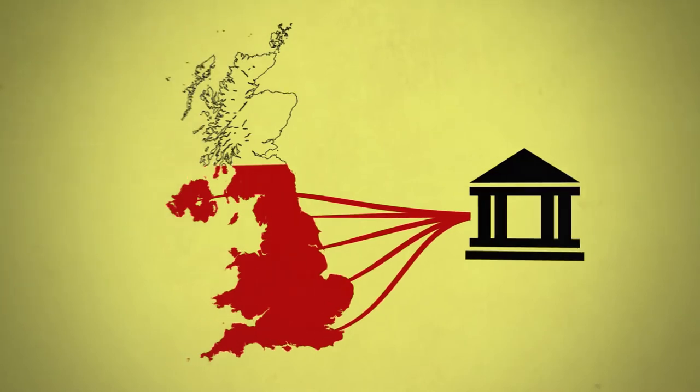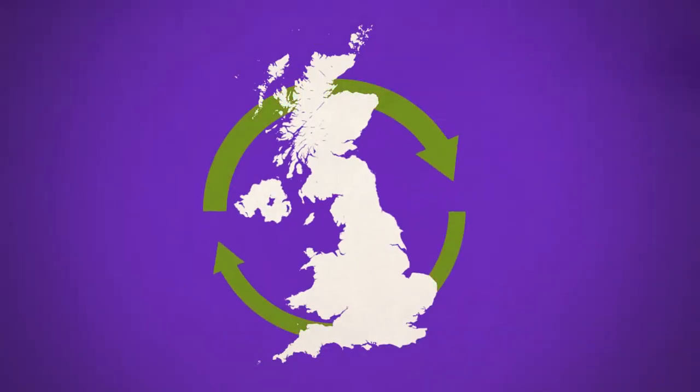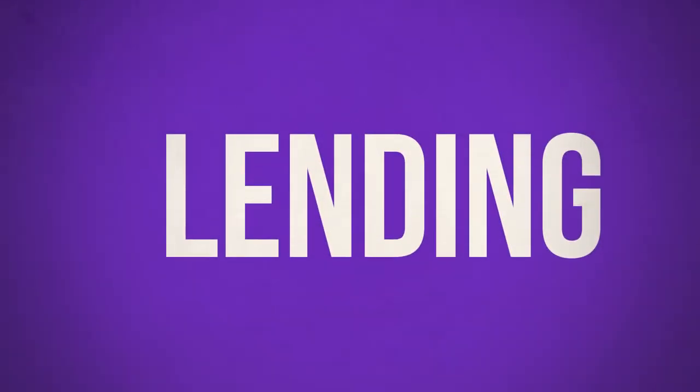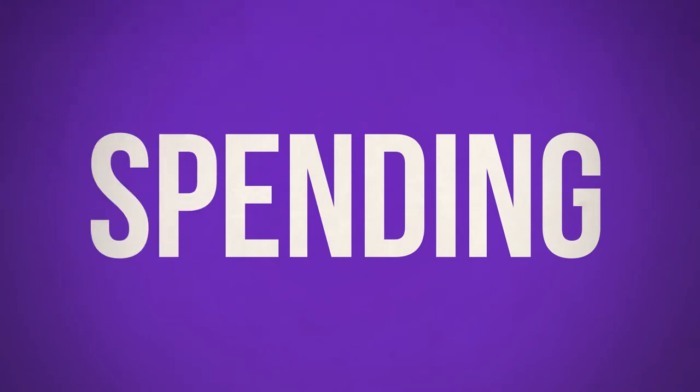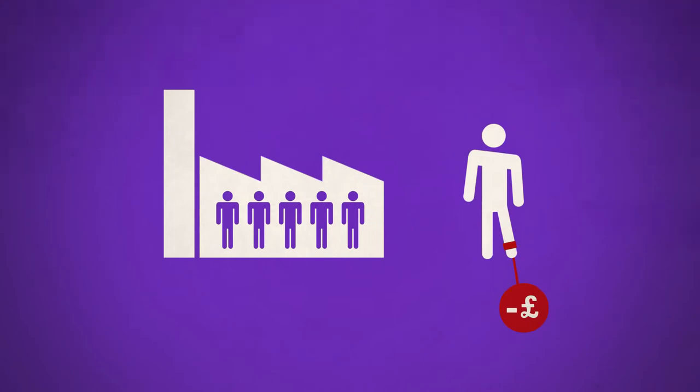Instead of letting banks create our money, the state could create it, free of debt. And instead of lending money into the economy through mortgages and loans, it could be spent into the economy. This means that new debt-free money would stimulate the real economy, create jobs, and make it possible for ordinary people to start paying down their debts.